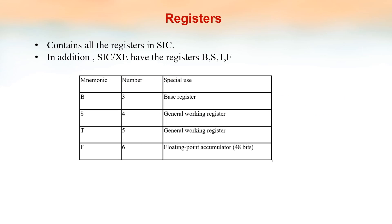SIC XE contains all the registers in SIC. In addition to that, SIC XE has 4 more registers: B, S, T, and F. B is the base register. S is a general working register. T is also a general working register. And F is the floating point accumulator of 48 bits.